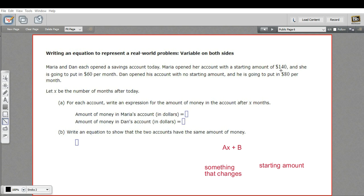Maria opened her account with a starting amount of $140, and she's going to put in $60 per month. Dan opened his account with no starting amount, and he's going to put in $80 per month.